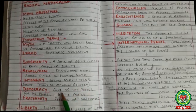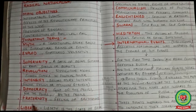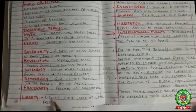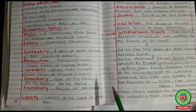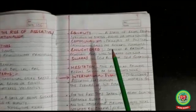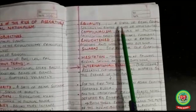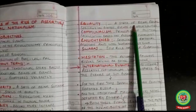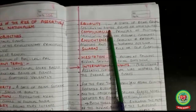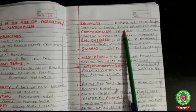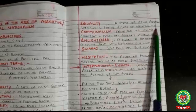Democracy: government of the people, for the people, by the people. Fraternity: feeling of brotherhood. Liberty: a state of being free. Equality: a state of being equal, especially in status, rights or opportunities.